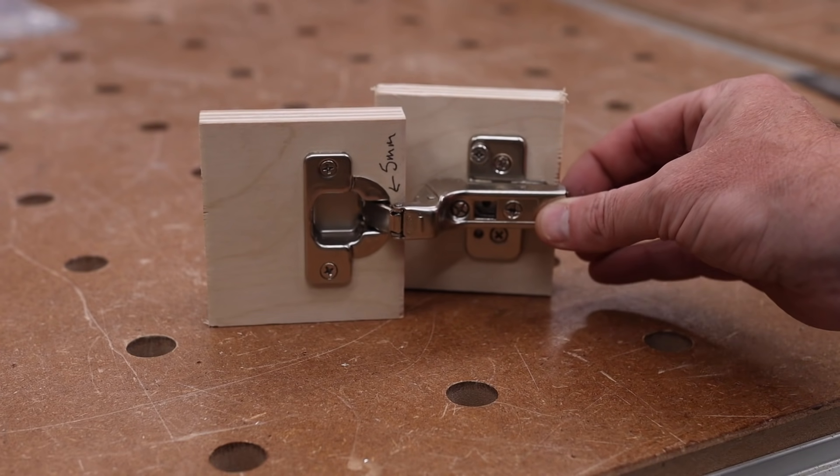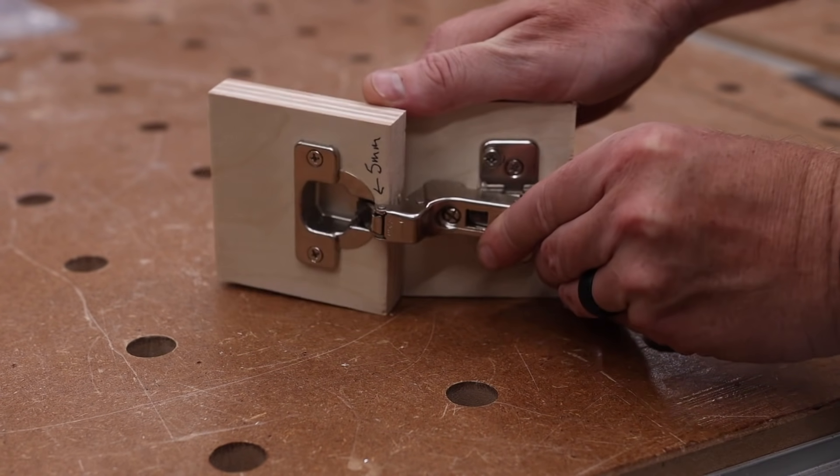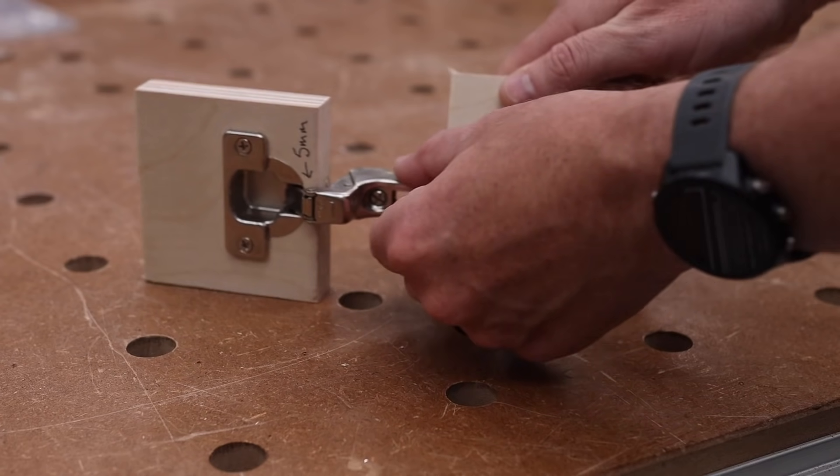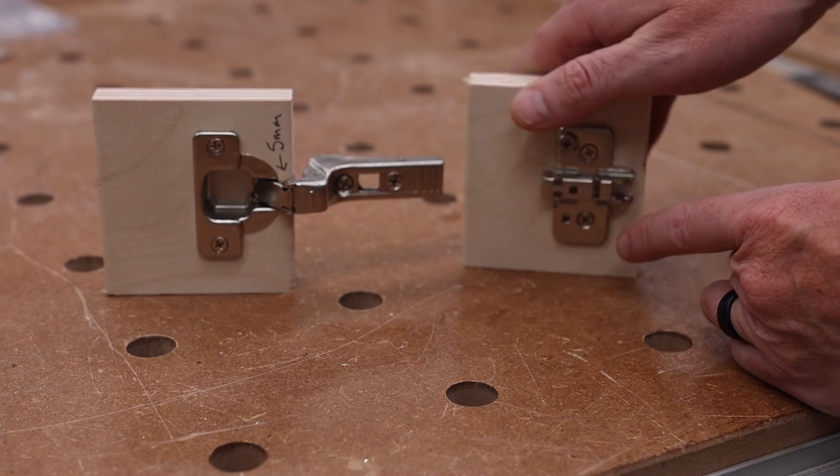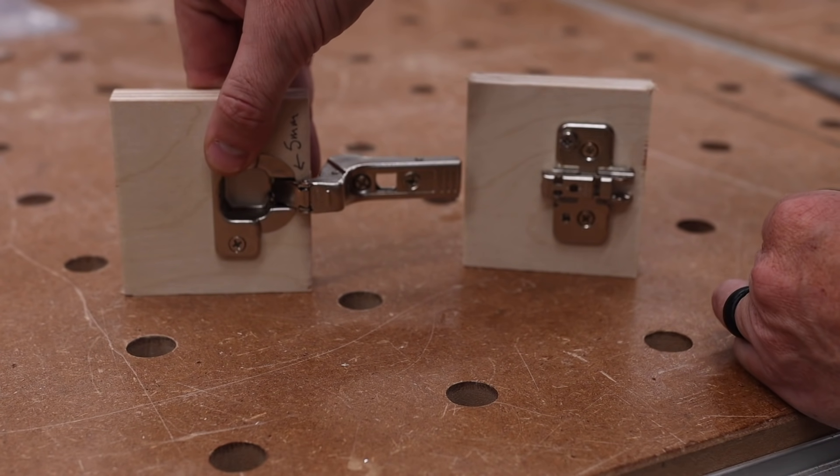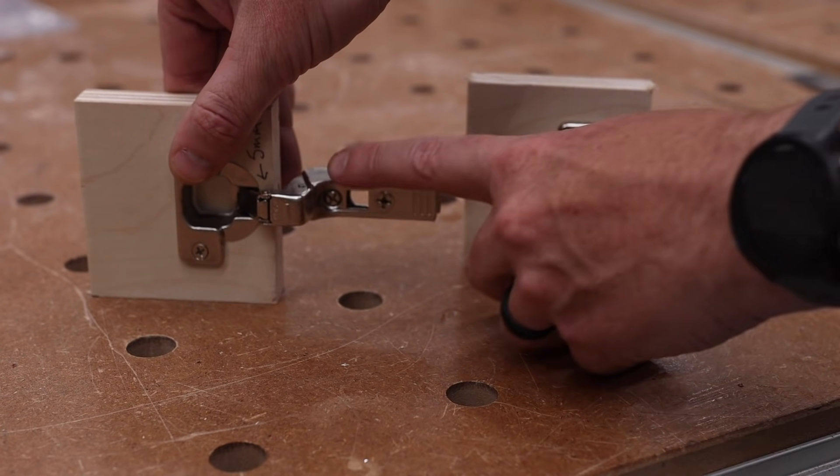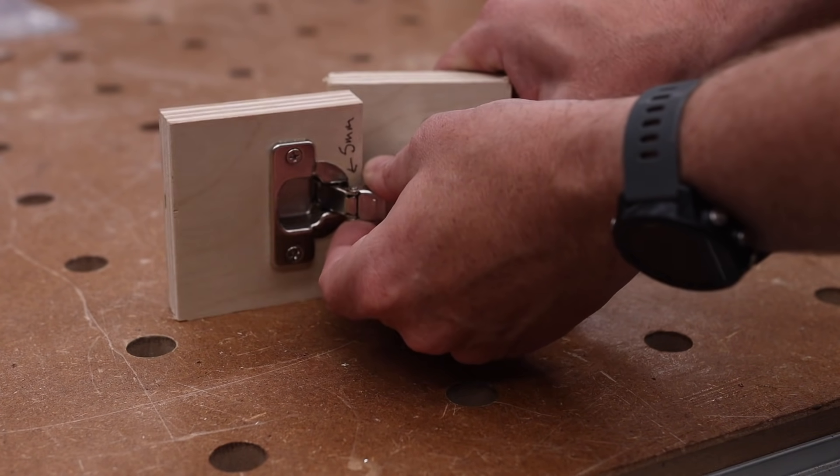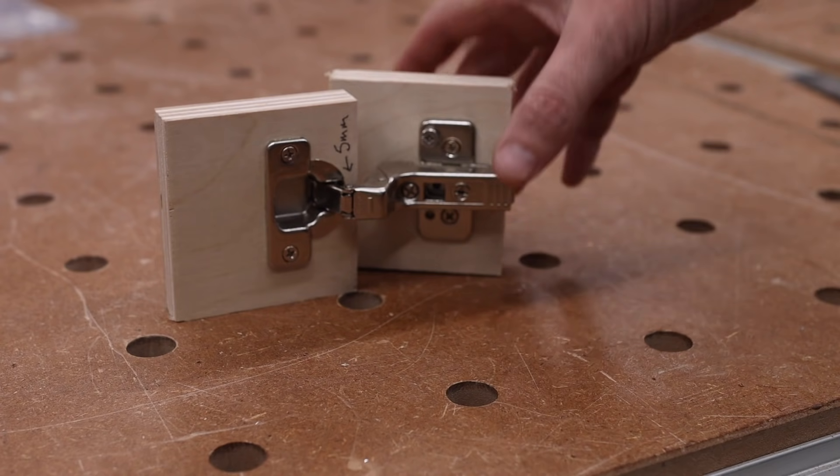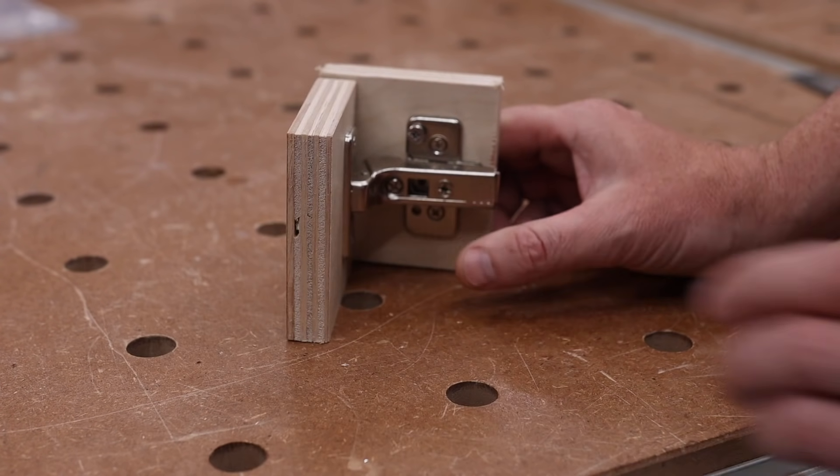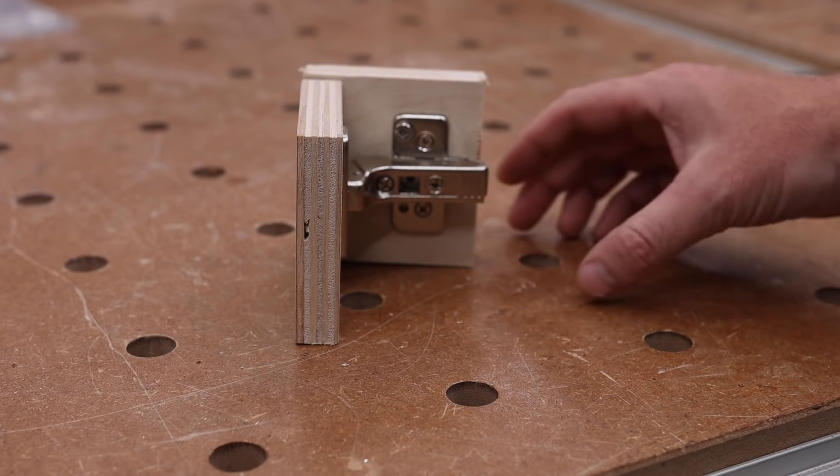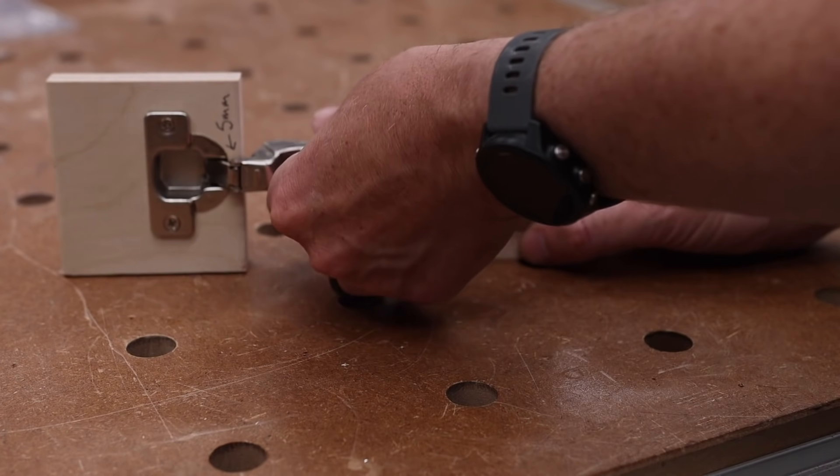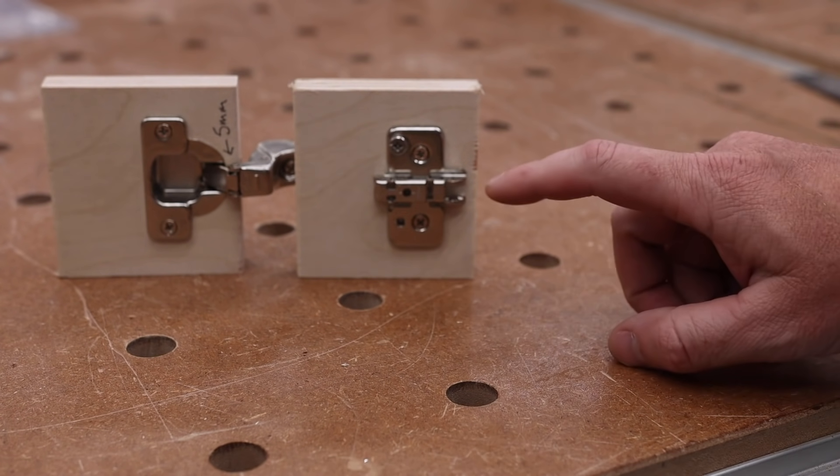Now looking at the hinge itself. The hinge is actually two parts. You have a hinge plate, which is this right here. And you have a hinge, which is this right here. This clips in to the plate just like that. And then that completes the hinge. So it makes it very easy to take the door off.